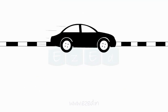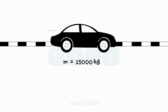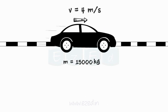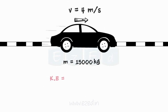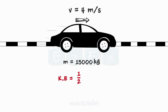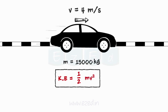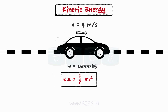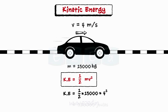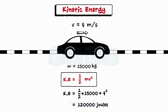What is kinetic energy? Consider a car of mass 15,000 kg moving with a velocity of 4 m per second. The kinetic energy possessed by the car is given by half into mass of the car and square of the velocity with which the car is moving. So, the kinetic energy possessed by the car is 1,20,000 joules. Kinetic energy is the energy possessed by the particle by virtue of its motion.